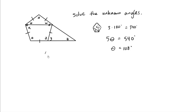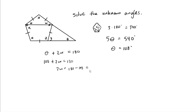So what we have here is theta plus 2w equals 180. Now we know what theta is — theta is 108. So I can just subtract both sides. So 2w equals 72. So w equals 72 divided by 2, which is 36 degrees. So we solve for w — w is 36 degrees. This angle is 36 and this angle is 36.